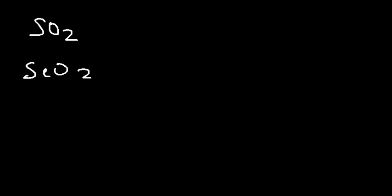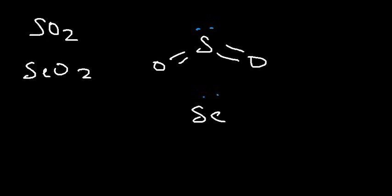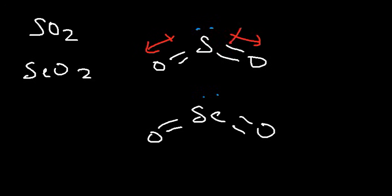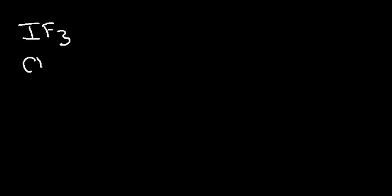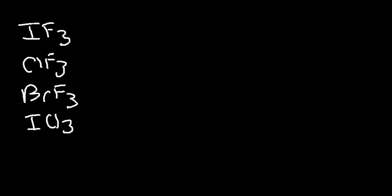SO2 and SeO2 have a similar bent shape to water but with only one lone pair instead of two. These molecules are polar because of their bent shape — oxygen is more electronegative than sulfur, so the arrows point toward oxygen at an angle and don't completely cancel. Molecules like IF3, ClF3, BrF3, ICl3, and BrCl3 all have the same bent shape and are all polar.